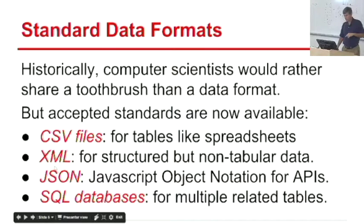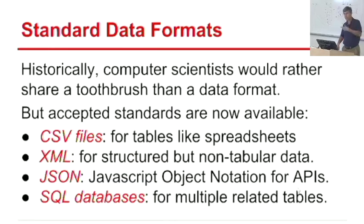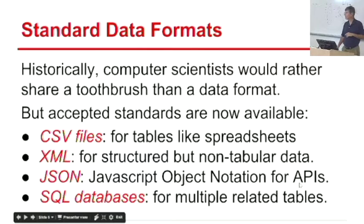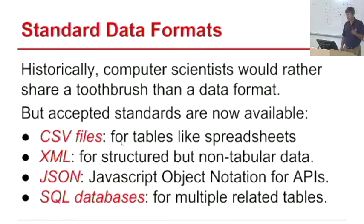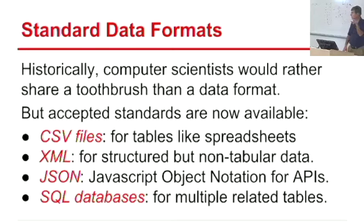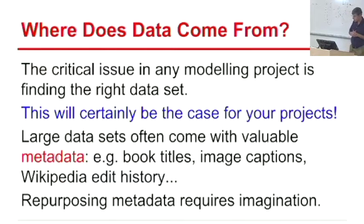JSON is something people use a lot in APIs — a way to send variables around from program to program. If you have an API providing access on top of your data, JSON is a standard interface for it. SQL databases are good if you're going to have multiple tables. The point is it's good to use a standard data format because you have tools people can build, and you can easily read or write your data set.